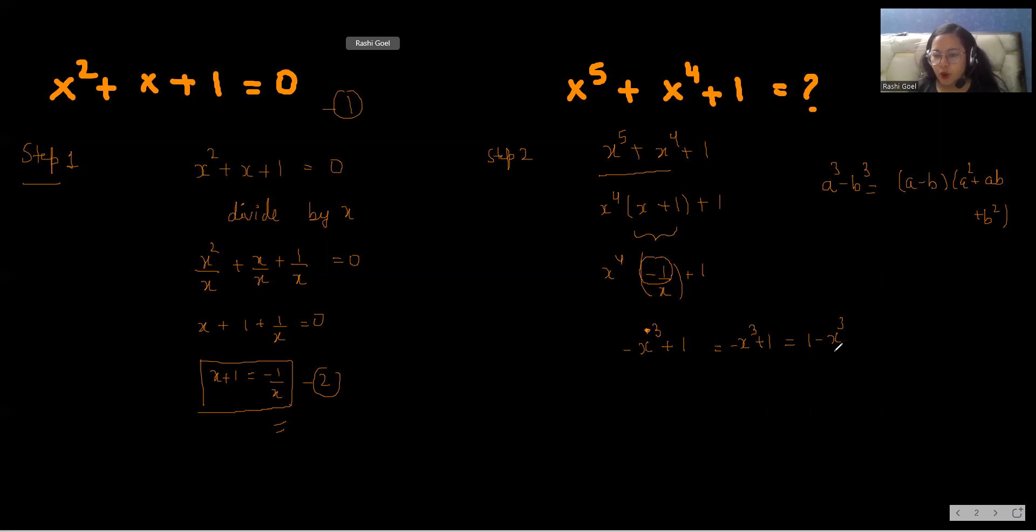We'll use the formula and we'll take 1 as a and x as b. So it looks like a minus b, that is 1 minus x, times a square which is 1 square equals 1, plus ab which is 1 times x equals x, plus b square which is x square.